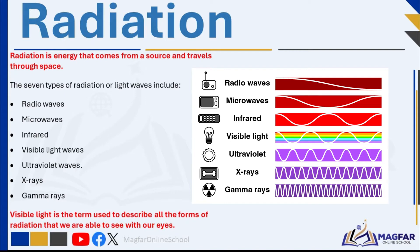We often refer to radiation as light waves. What are some sources of radiation? The sun, a light bulb, and a fire are sources of radiation.